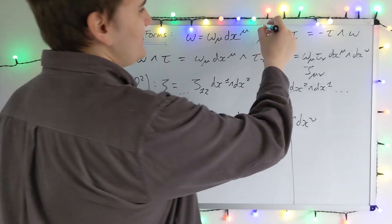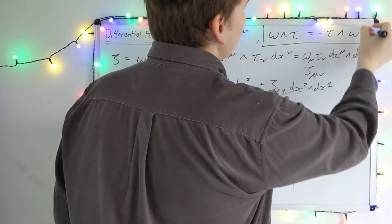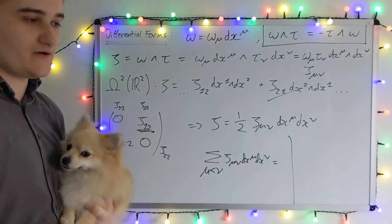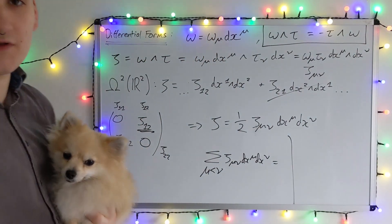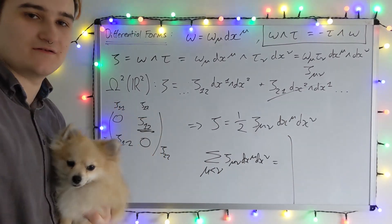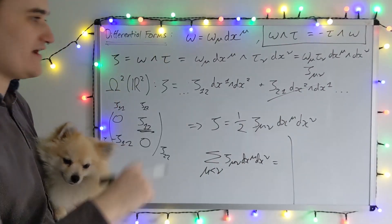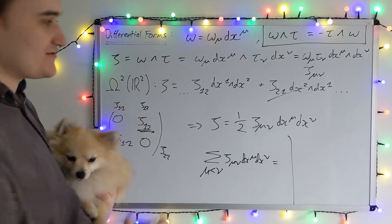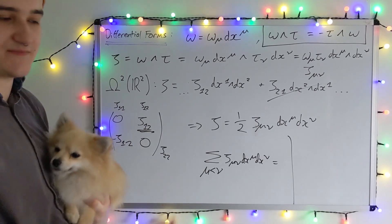So this anti-symmetry we're starting to see is very, very crucial to these differential forms. And it's going to be cropping up all over the place. And we need to be really careful with how we deal with these expressions. Okay, so this was just a little introduction to differential forms on the space Rd.